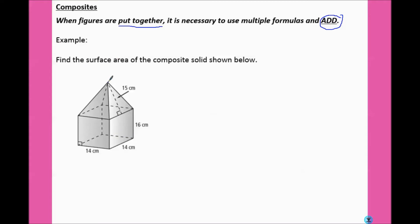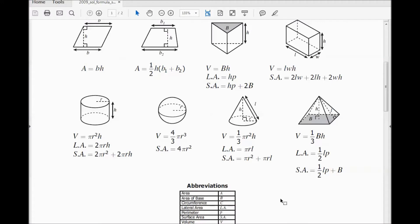Surface area means everything outside. Now, normally the surface area of a pyramid would include the bottom, but when we put these two shapes together, the bottom doesn't count anymore. If you recall, that's actually called the lateral area. So for the pyramid, we are going to find the lateral area. The formula for the lateral area is one-half LP.